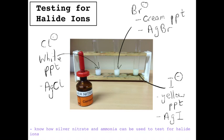You can see that actually the colours from a distance aren't that dissimilar to each other, so we have to use a second technique in order to confirm what the halide ions are. We can use ammonia to do that — dilute ammonia and concentrated ammonia.